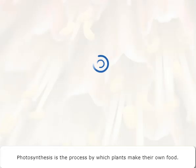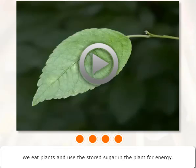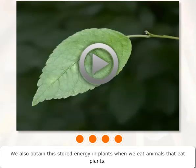Photosynthesis is the process by which plants make their own food. We also rely on photosynthesis for food. We eat plants and use the stored sugar in the plant for energy. We also obtain this stored energy in plants when we eat animals that eat plants.